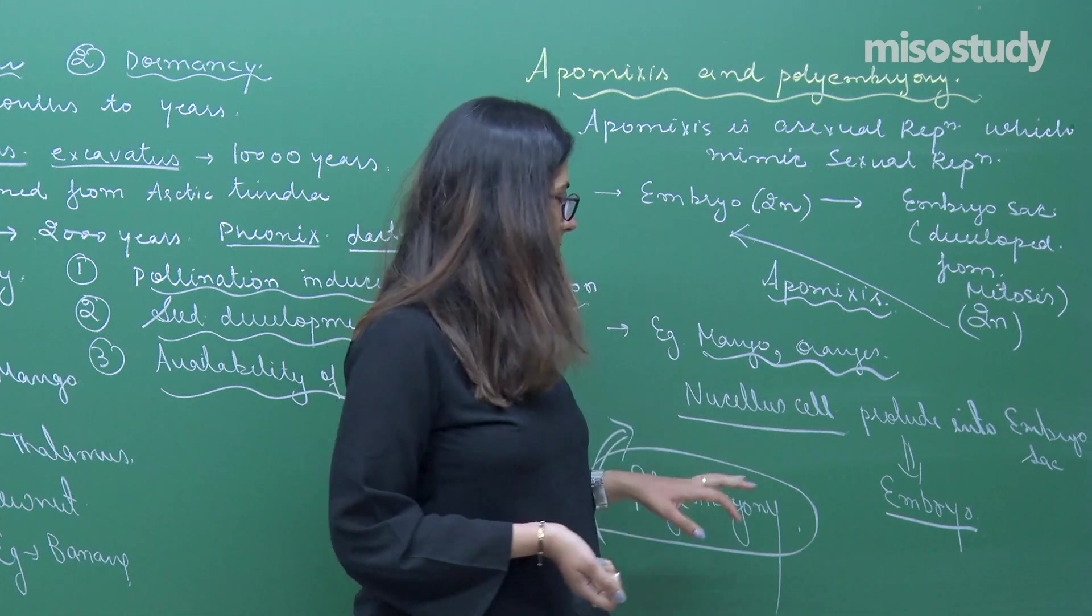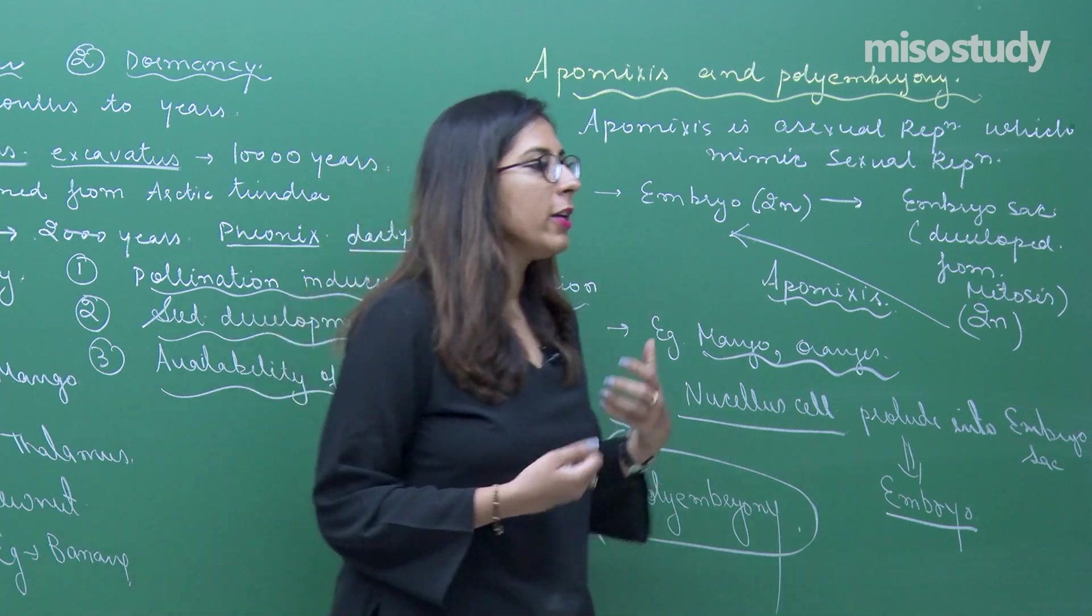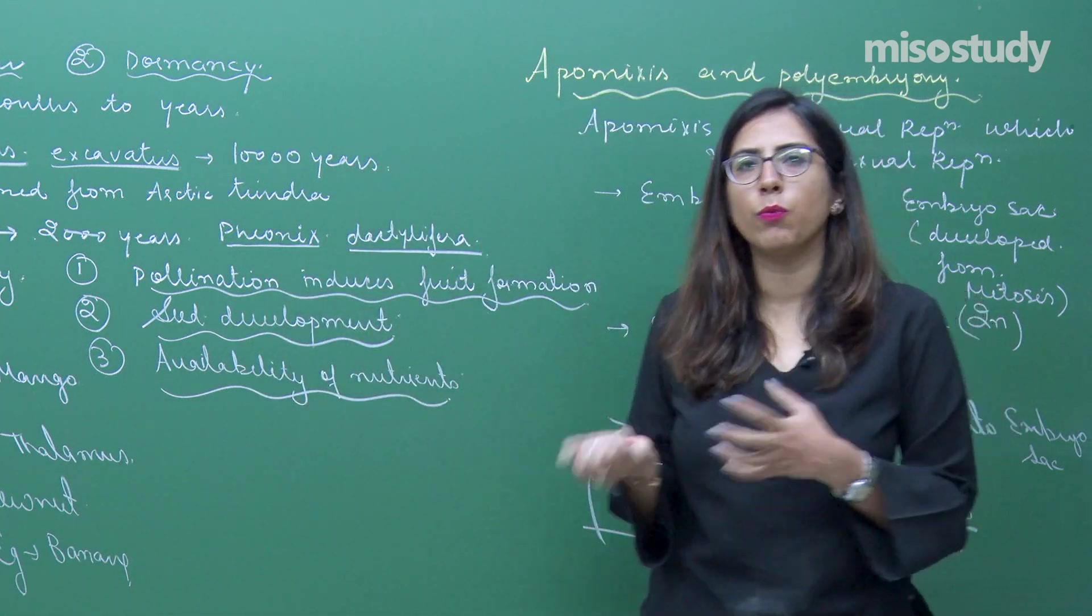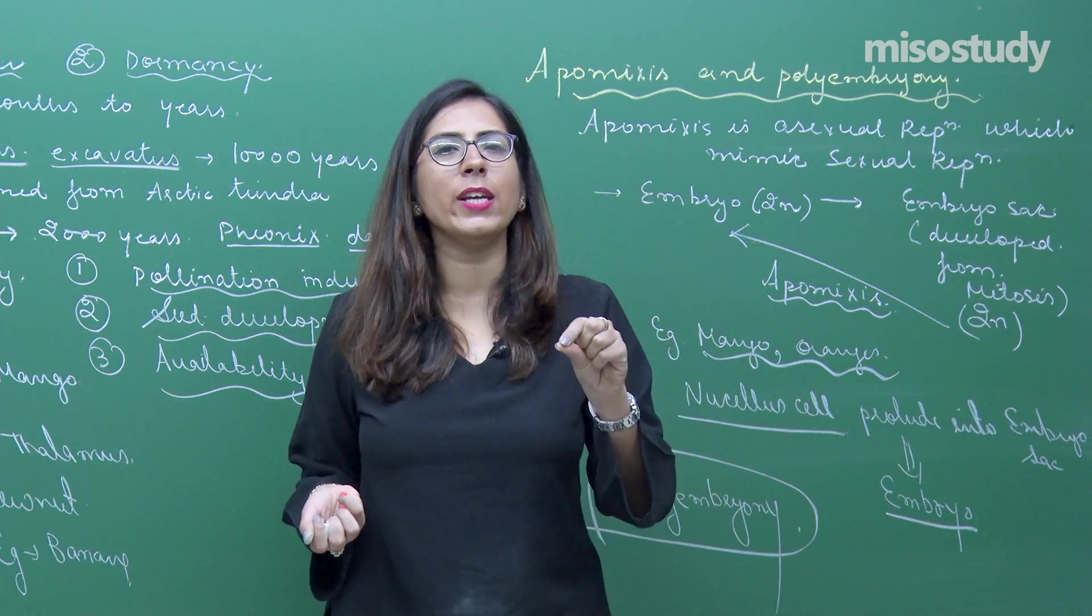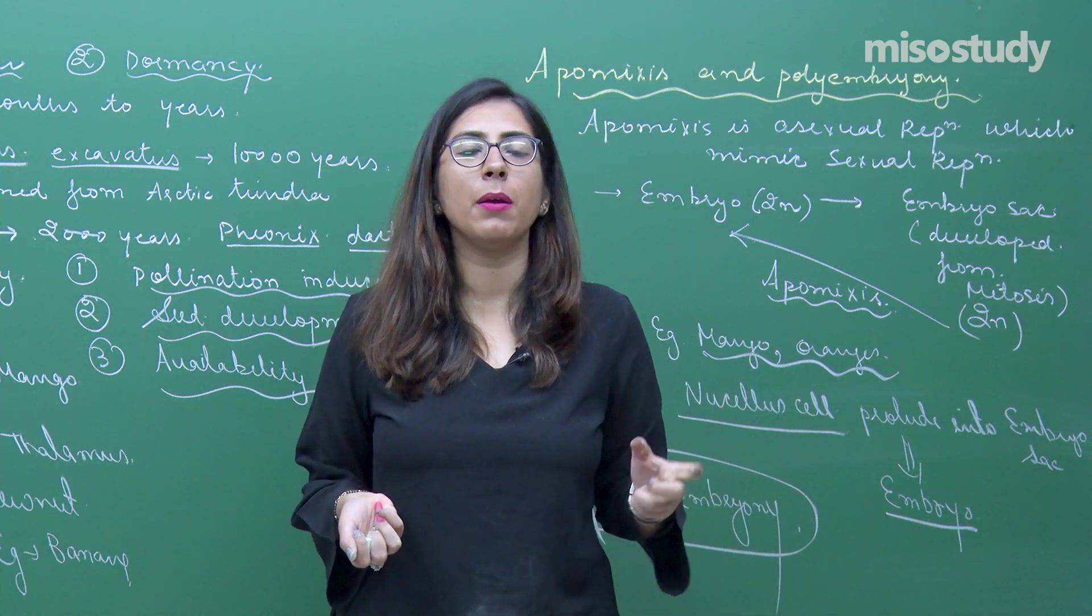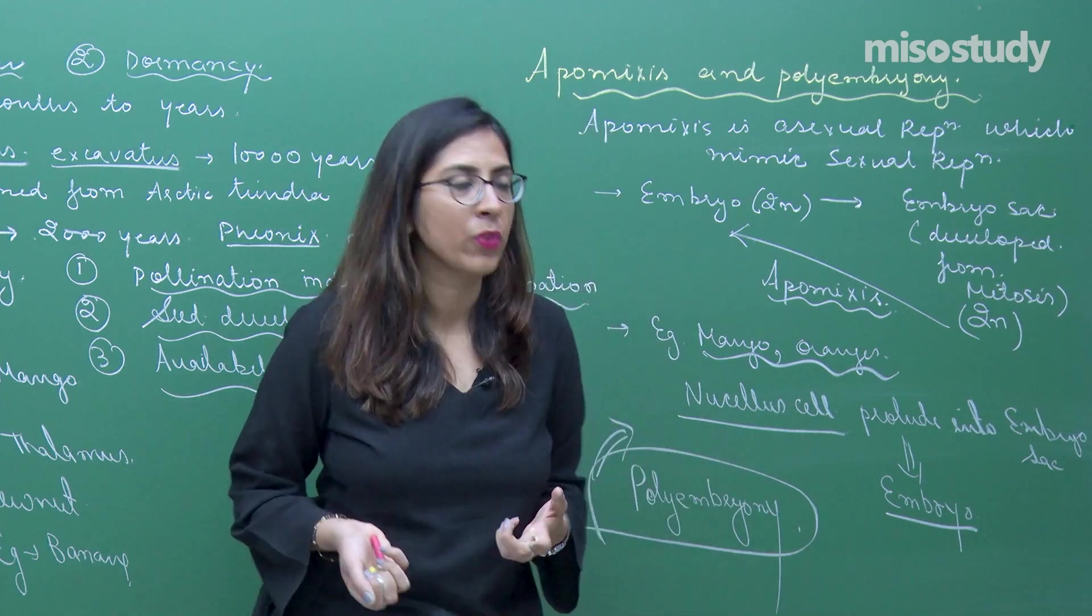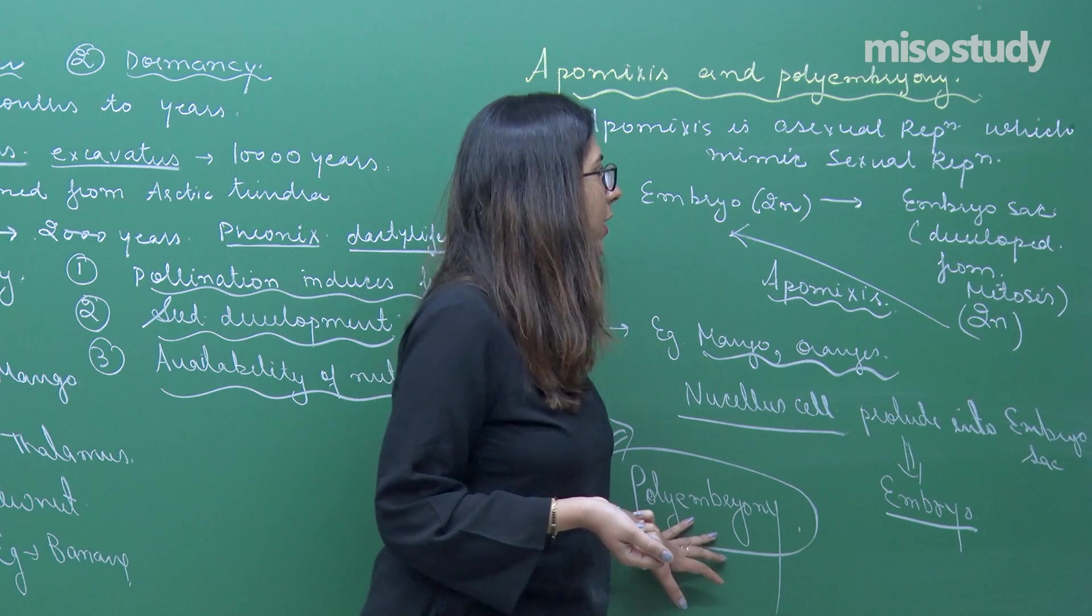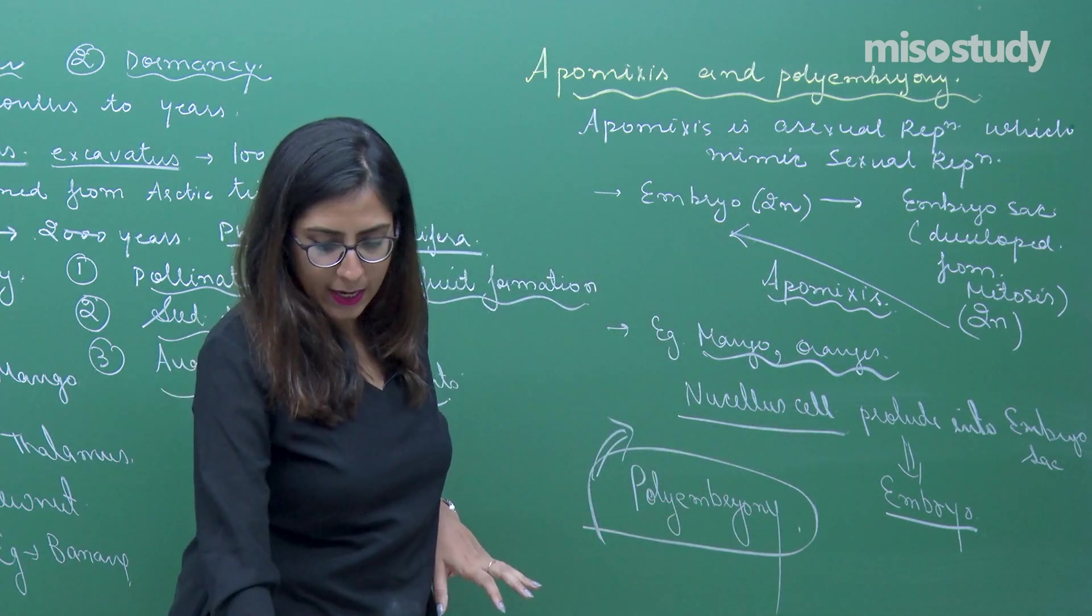One seed and many embryos - you can take an example of orange. When you try to squeeze those seeds you will see the embryos will be present and that embryo will be of different sizes. That is actually polyembryony conditions and this is how apomixis is.